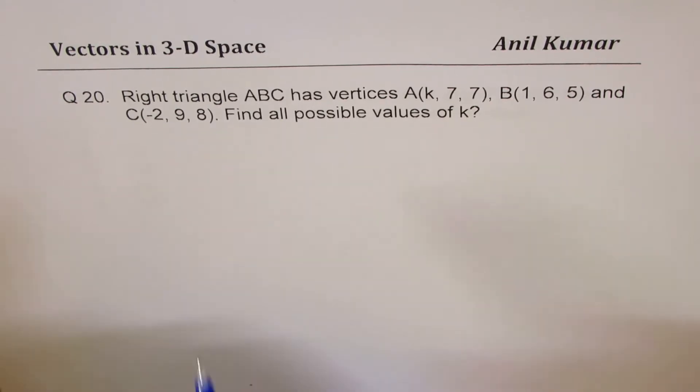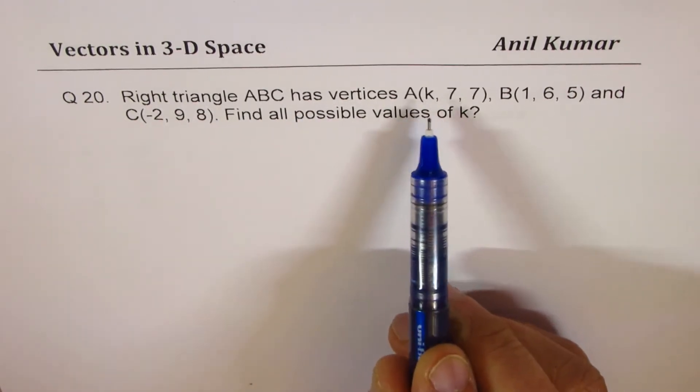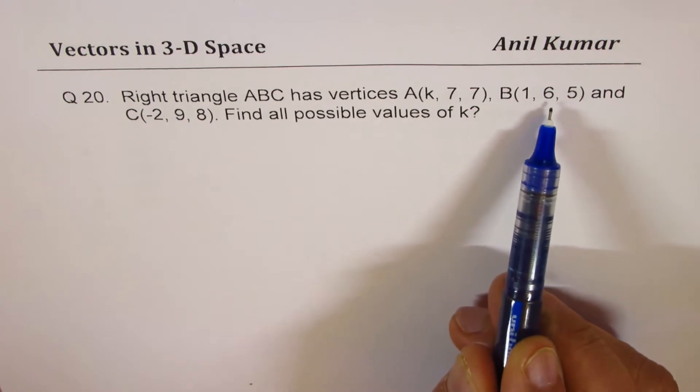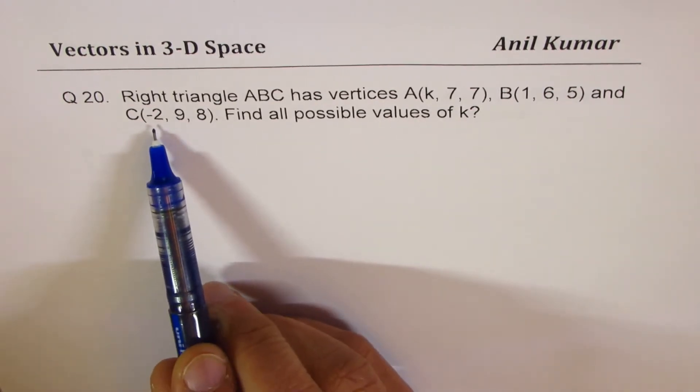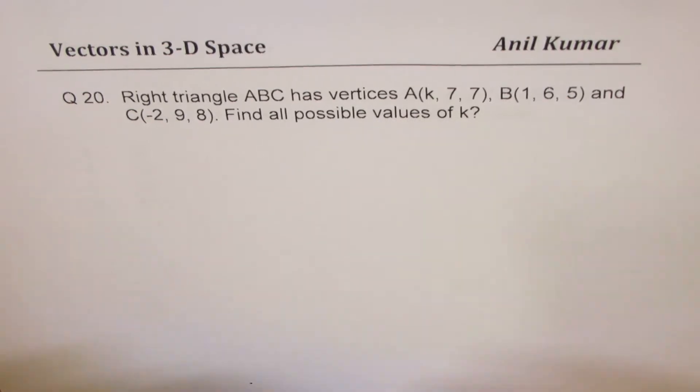Question number 20 is: Right triangle ABC has vertices A(K, 7, 7), B(1, 6, 5), and C(−2, 9, 8). Find all possible values of K.